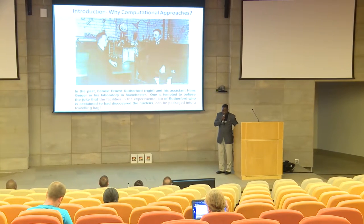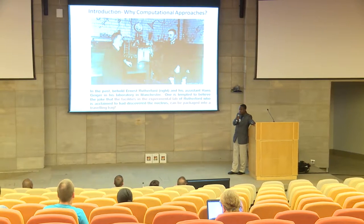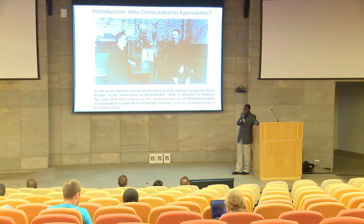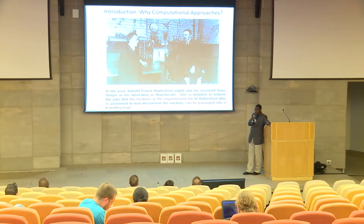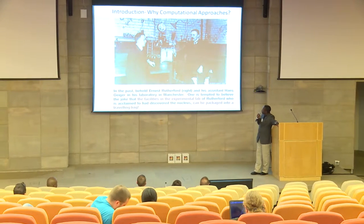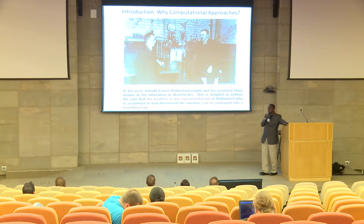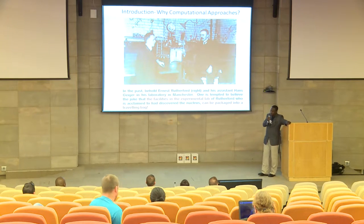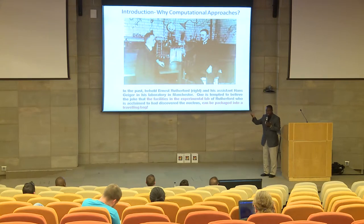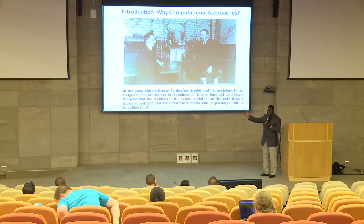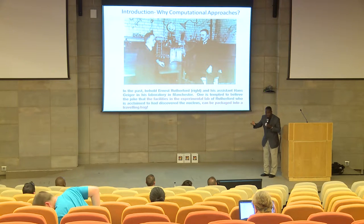Why computational physics? That picture is Rutherford, who is claimed to have discovered the nucleus. The atom is made up of an electron revolving around the nucleus, which contains the proton and neutron — discovered by Rutherford. If you see the experimental setup, that is all the equipment Rutherford and his assistants used. If you invited Rutherford to demonstrate his experiment, he could have taken everything into a bag, carried it to wherever you are, and shown you that the nucleus is at the center of the atom. He could carry his whole lab in a bag.